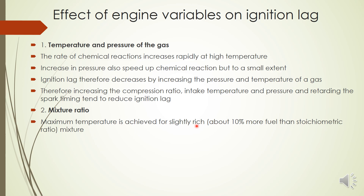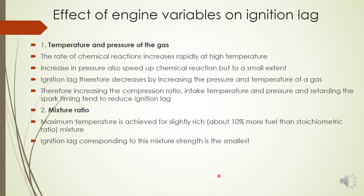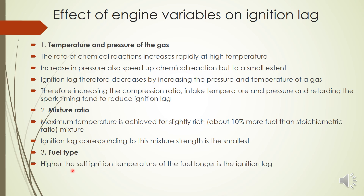Regarding mixture ratio (air–fuel ratio): maximum temperature is achieved when the mixture is slightly rich — about 10% richer than the stoichiometric ratio. The stoichiometric ratio is the chemically correct air–fuel ratio for complete combustion. At a 10% rich mixture, we get maximum temperature, and therefore the minimum ignition lag.